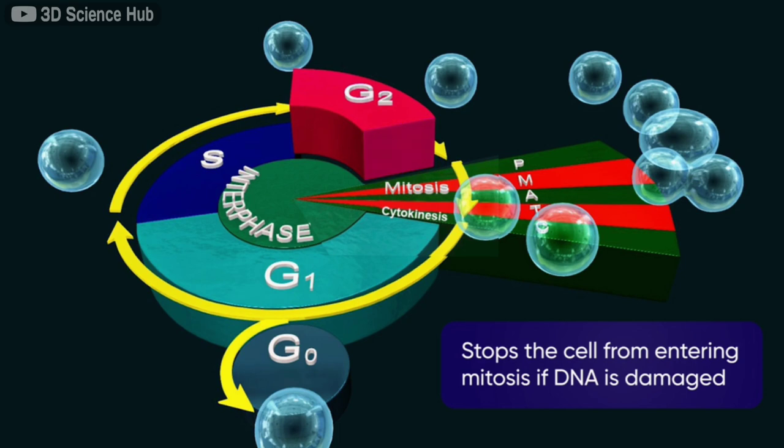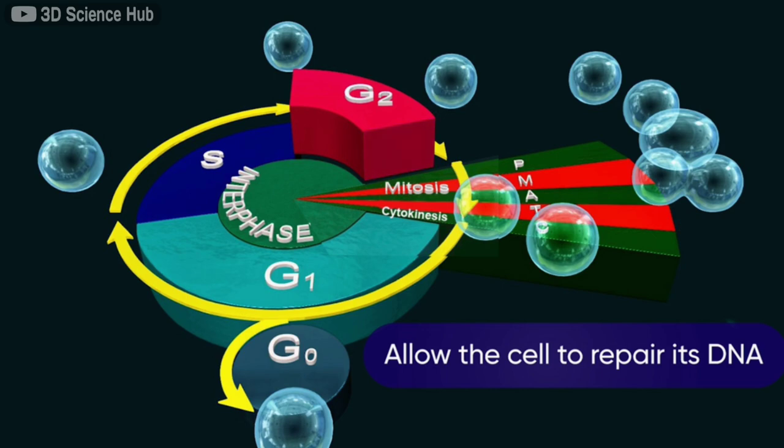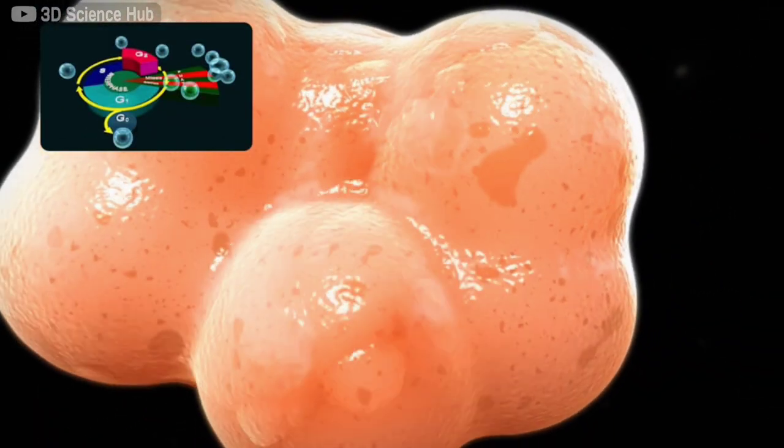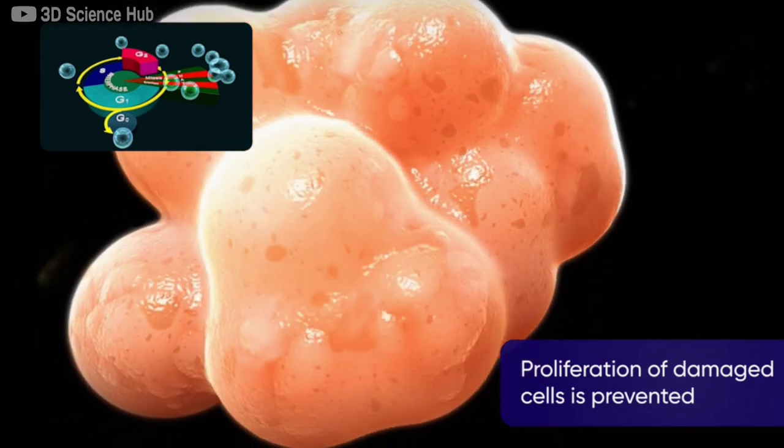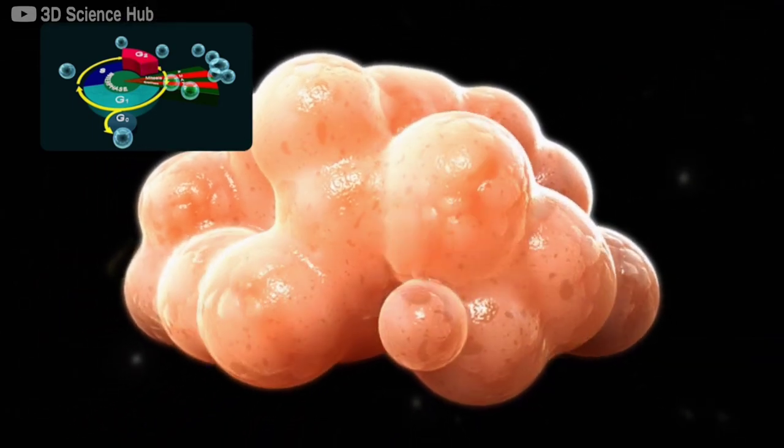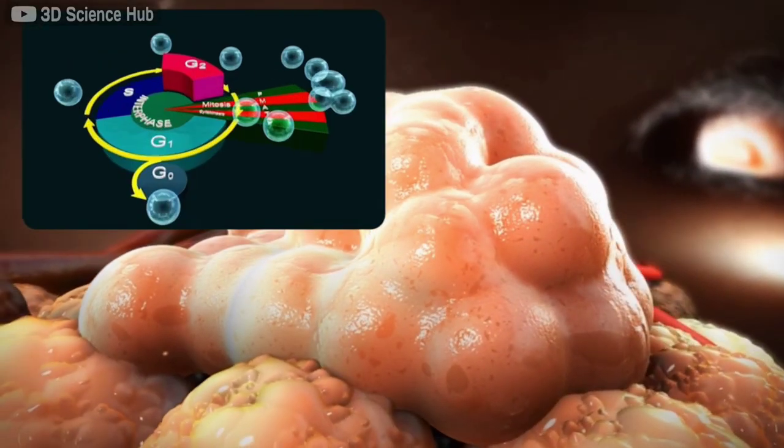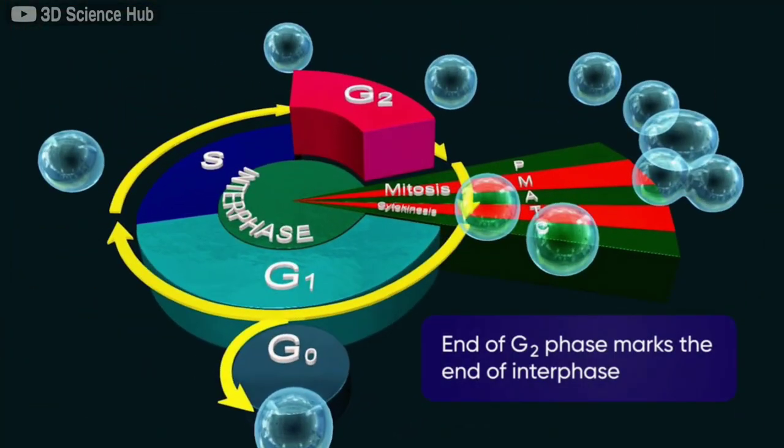It will allow the cell to repair its DNA. Thanks to the G2 checkpoint, the proliferation of damaged cells is prevented, avoiding terrible consequences for the organism like developing cancer. The end of the G2 phase marks the end of the interphase.